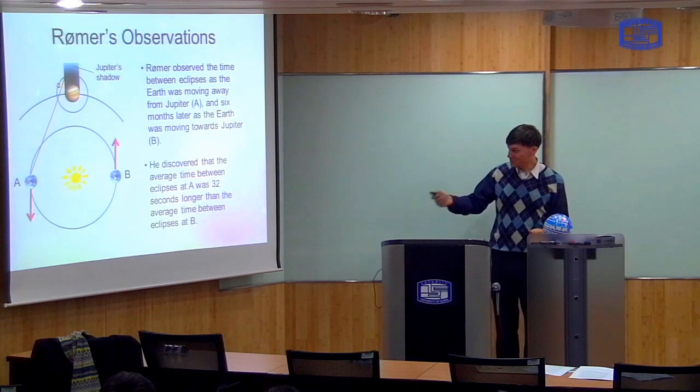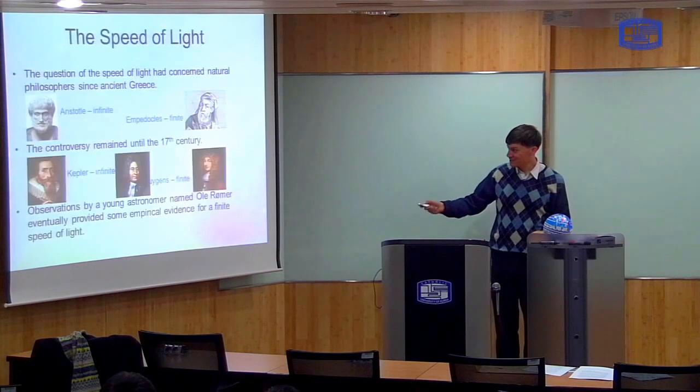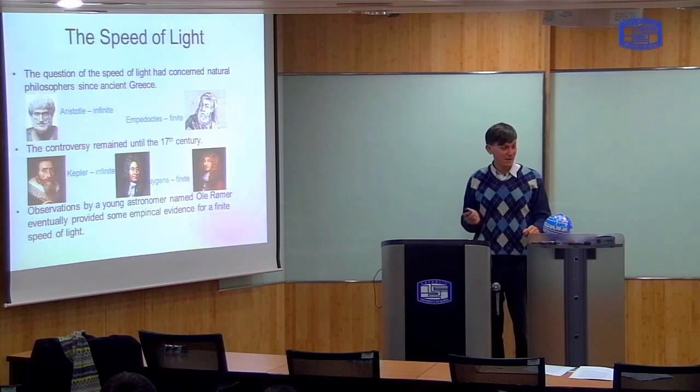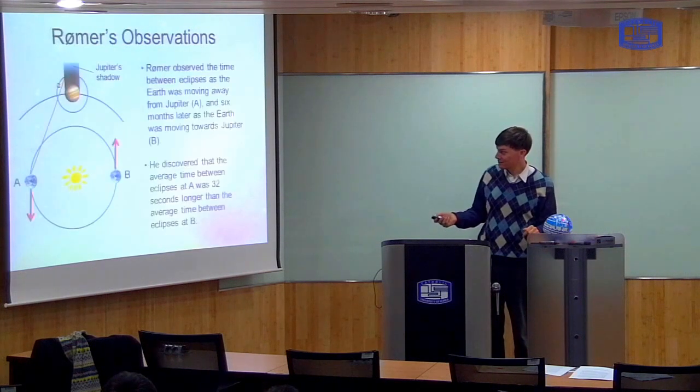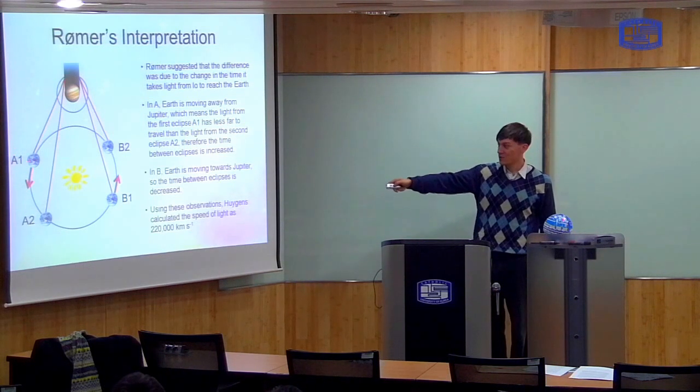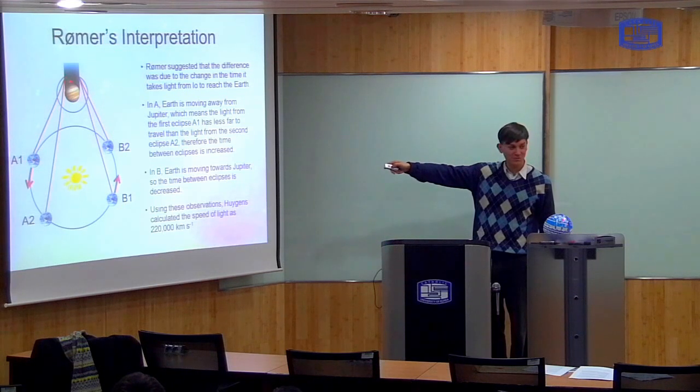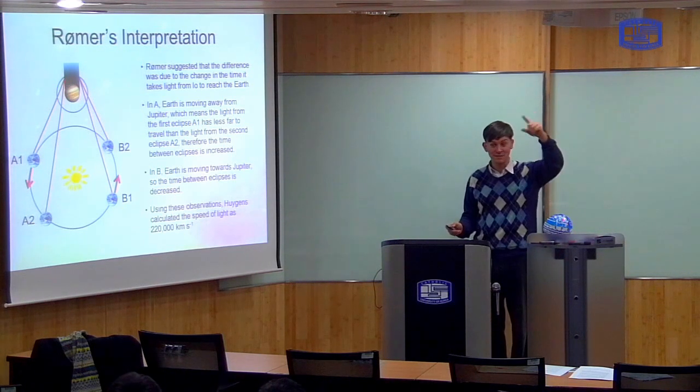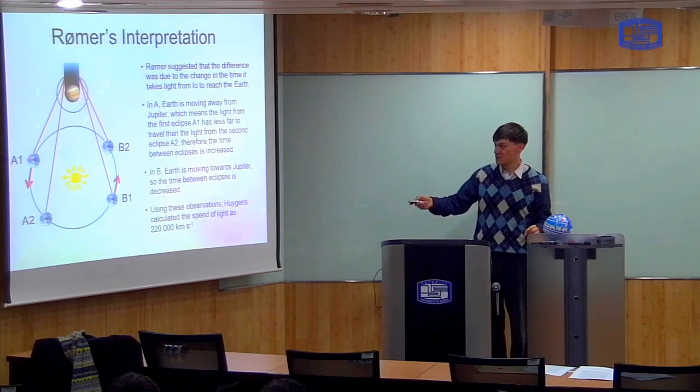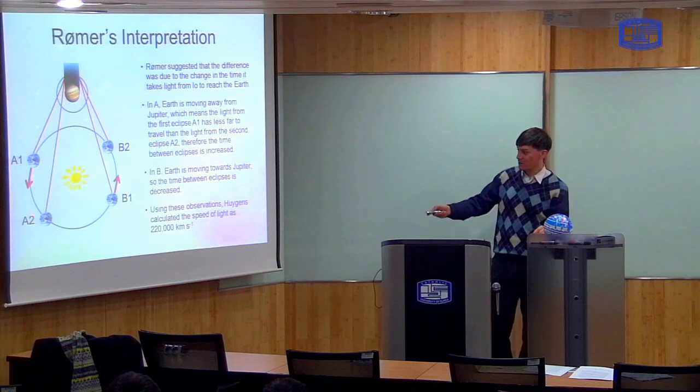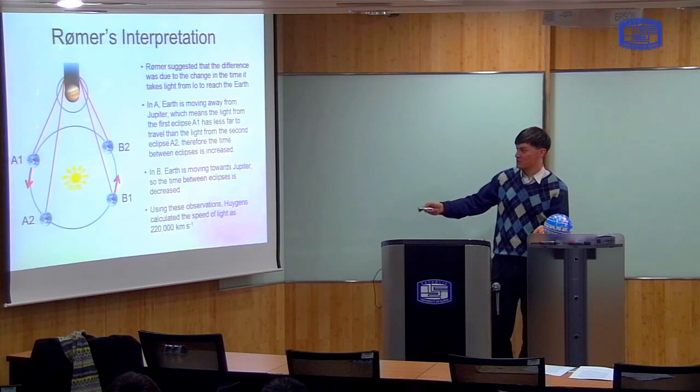And Huygens, who was the guy I showed you in the previous slide, this guy, he explained this observation using the finite speed of light. And he explained it in the following way. Okay? So you imagine that you're observing an eclipse at A. Okay? So A1 is the time of the first eclipse, when you see Io vanish here. Okay? Then Io goes all the way around Jupiter and comes back, and then there's a second eclipse, which is at A2. But because the Earth is now further away from Jupiter. Right? So it's closer at A1 and further away at A2. Right? So now it goes around the Sun, and then you measure the same thing when the Earth is moving towards Jupiter.